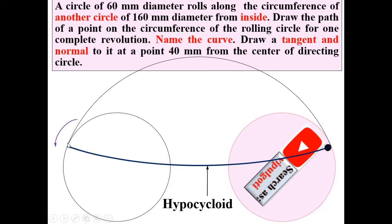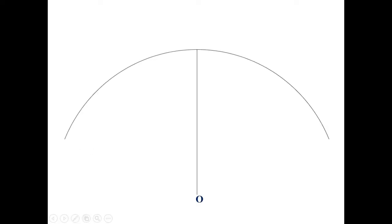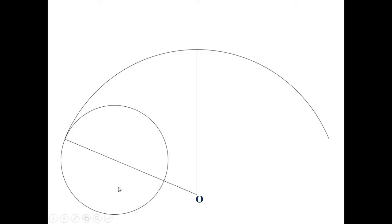Now we are going to draw the hypocycloid step by step, and at the end we will see the normal and tangent at a point 40 mm from the center of the directing circle. First, take O as the center and draw the directing circle having radius 80 mm. The rolling circle rolls inside with diameter 60 mm. Now, an important part is finding the angle theta for the hypocycloid.